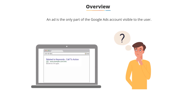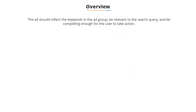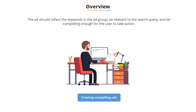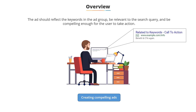When you think about your Google Ads account, the ad is the only part of your account that a searcher actually sees. Your ad serves as a bridge between what a user is trying to learn and your website. Therefore, the ad should be reflective of the keywords in the ad group so it's relevant to the search term, along with containing compelling reasons for a user to want to click on your ad and visit your site. In this video, we're going to examine how to create effective ads.